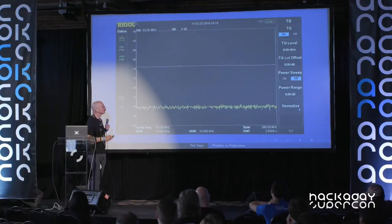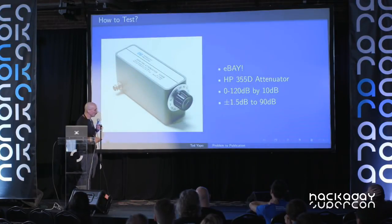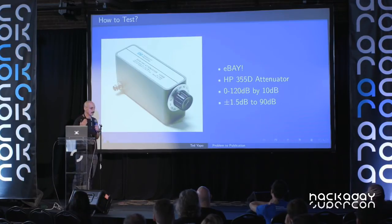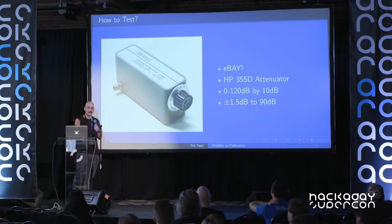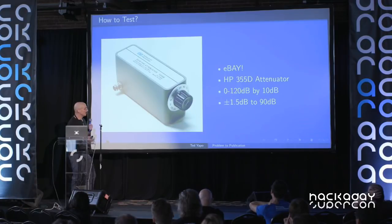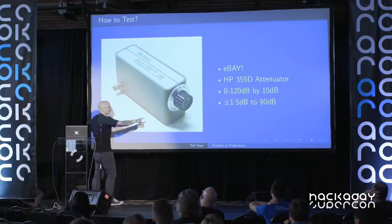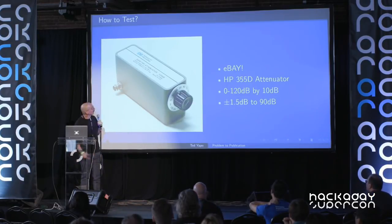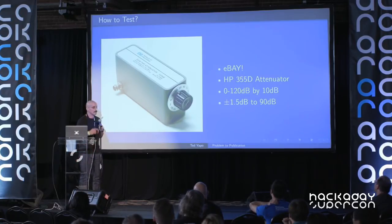I wanted to test this with something I knew. I went to eBay and bought an HP step attenuator — it's a relic. I know they use a capital D in dB, which was a long time ago, though at least they call them megahertz instead of megacycles per second. But this still works great — it's zero to 120 dB by 10 dB steps.